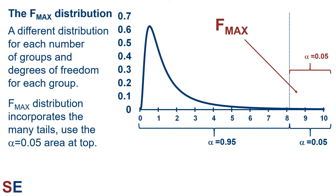For the F-max test, things are only slightly different. There is a different F-max distribution for each number of groups and degrees of freedom for each group, and we try to ensure that our samples from each population are identical in size. Unlike the F-distribution, which has both one-tailed and two-tailed applications, the F-max distribution is only used for this test. The distribution incorporates the many tails and we always use the alpha equals 0.05 area at the top. We calculate an F-max value and compare it to the F-max distribution to see if our calculated value is in the top 5%. If so, the p-value is less than 5% and we reject the null hypothesis, concluding that at least one variance is larger than at least one other. If not, we fail to reject the null hypothesis.